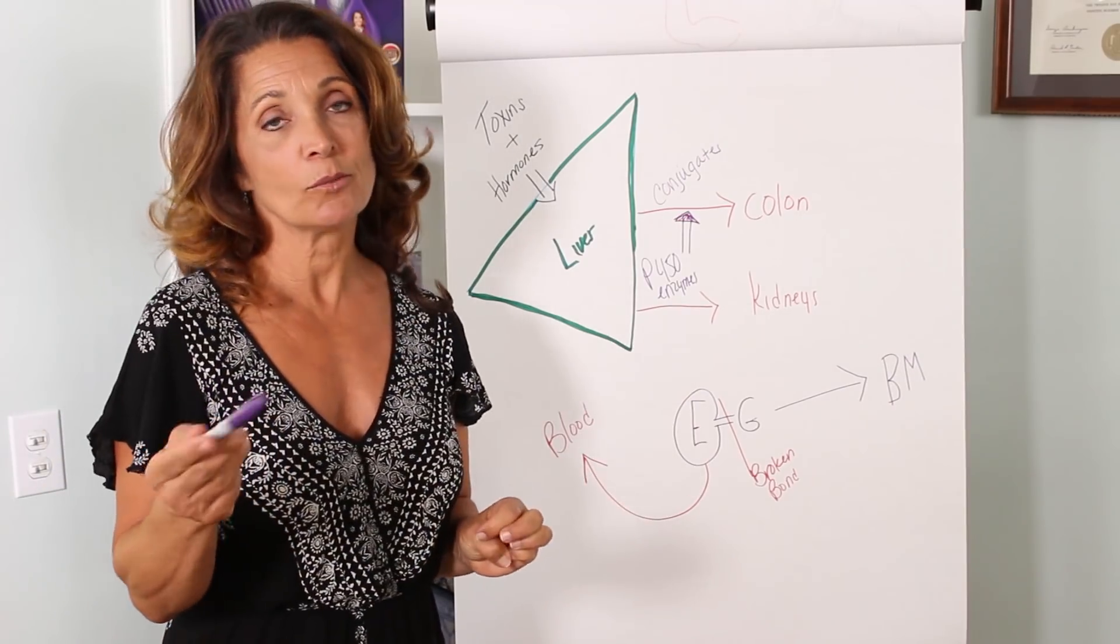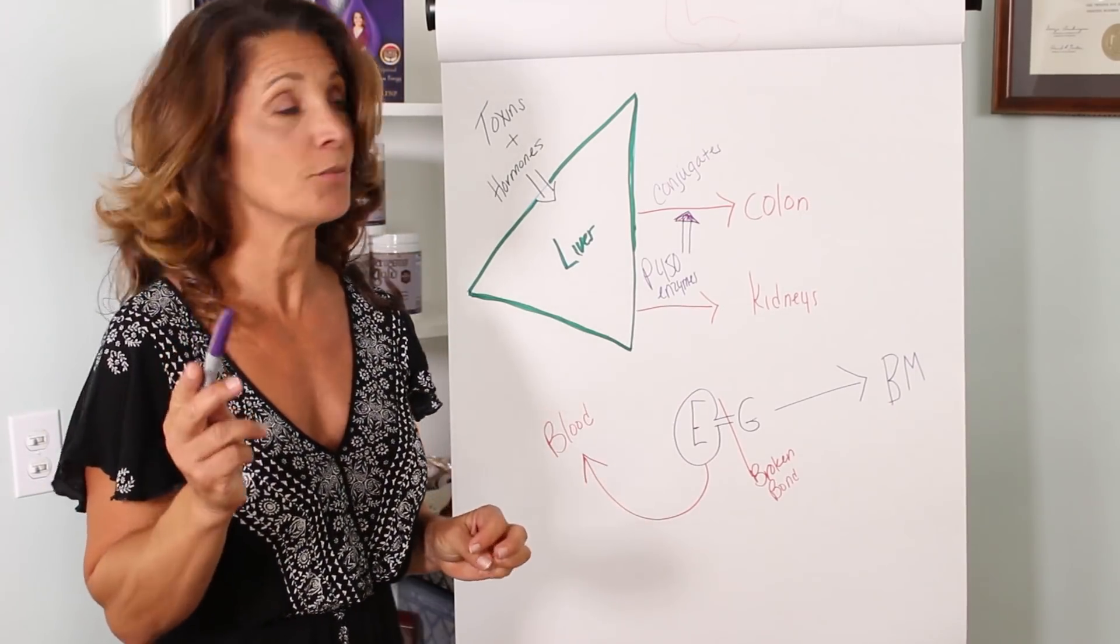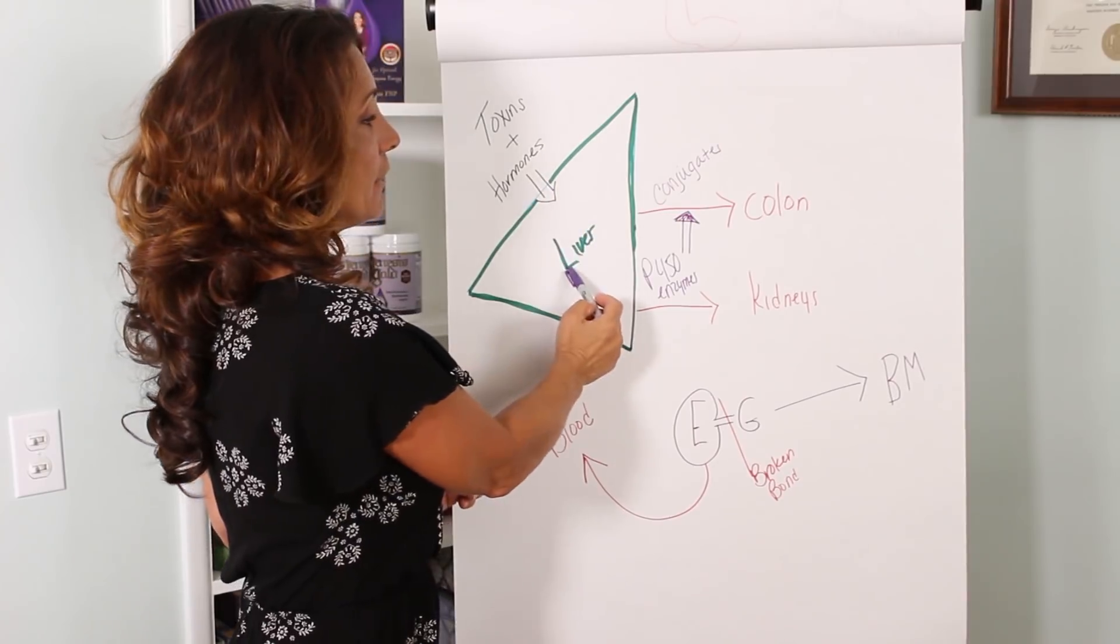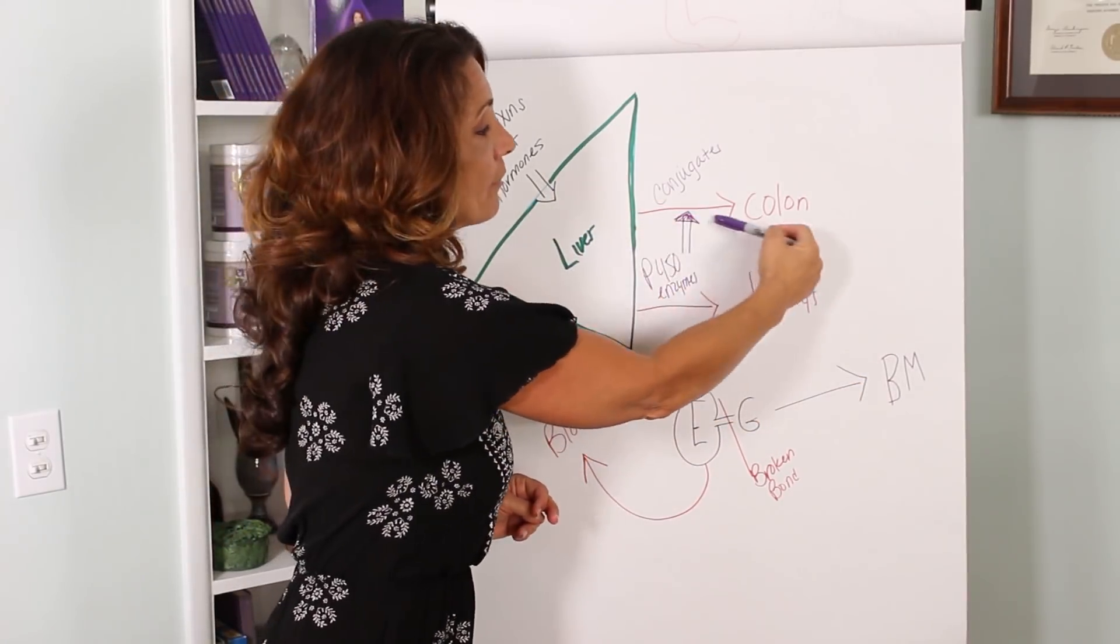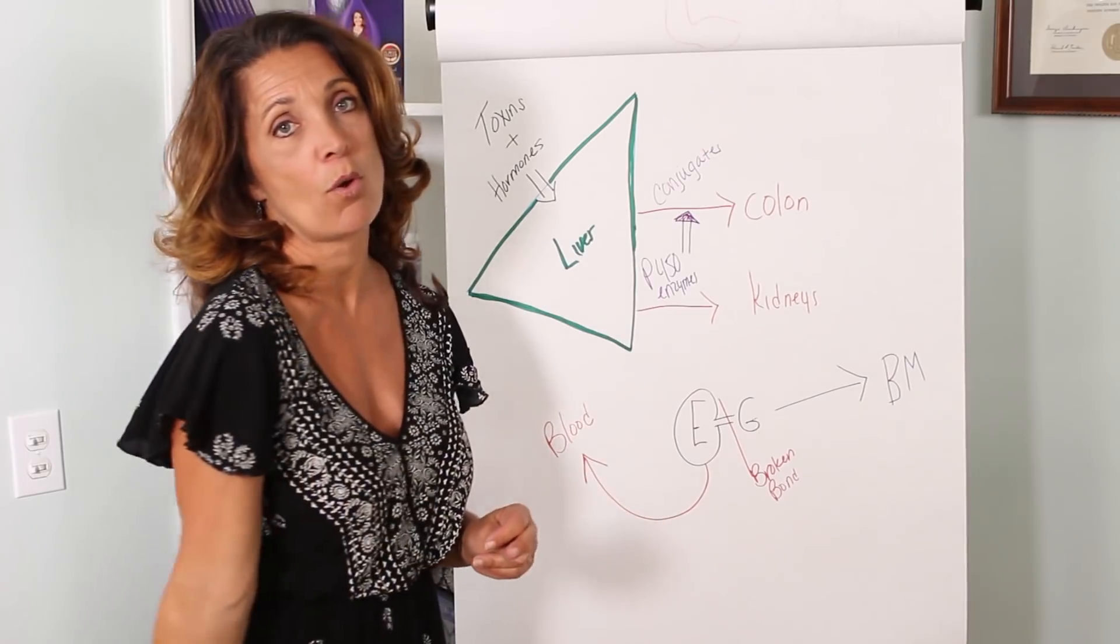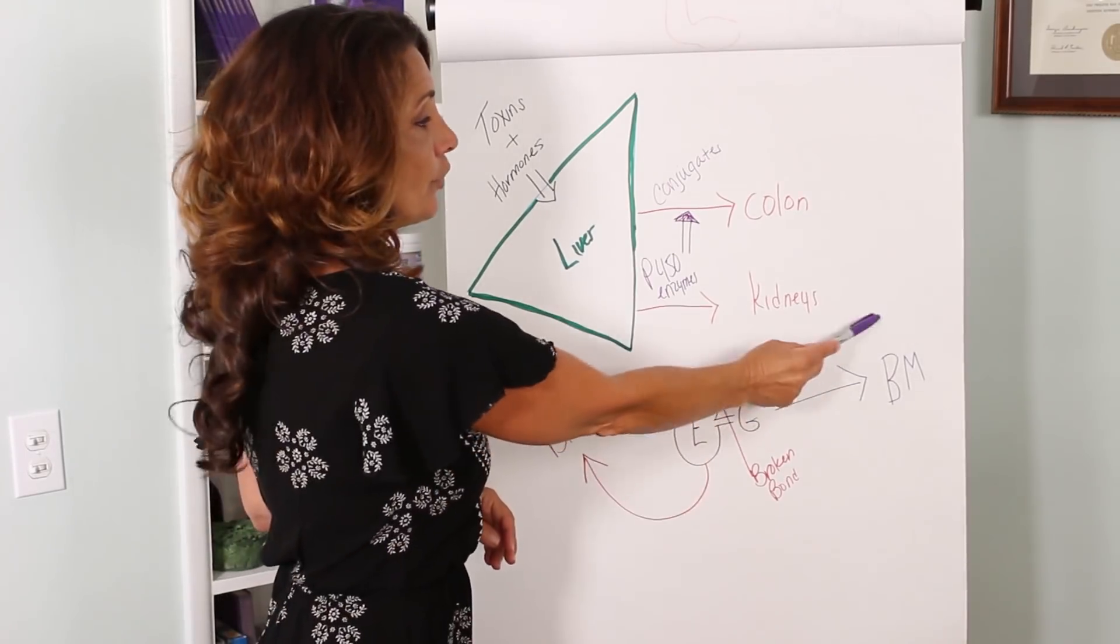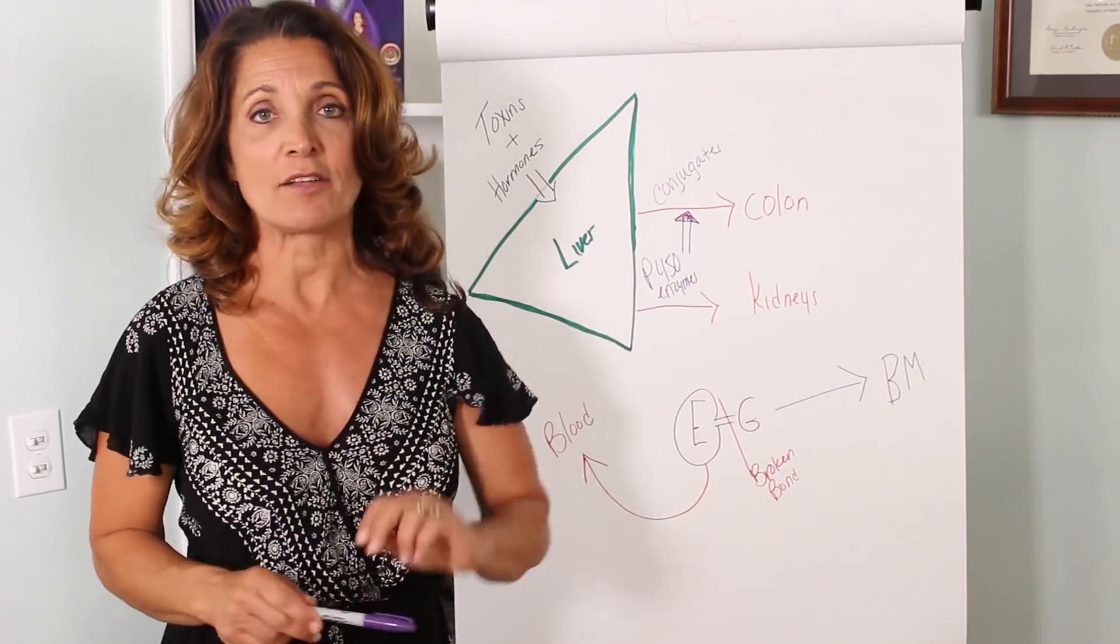So you have two ways out, well you actually have three, but the first two ways are out through the liver and urinate out through the kidney or out through the liver and defecate out through the colon, either in your urine or your bowel movement. That's how toxins get out.